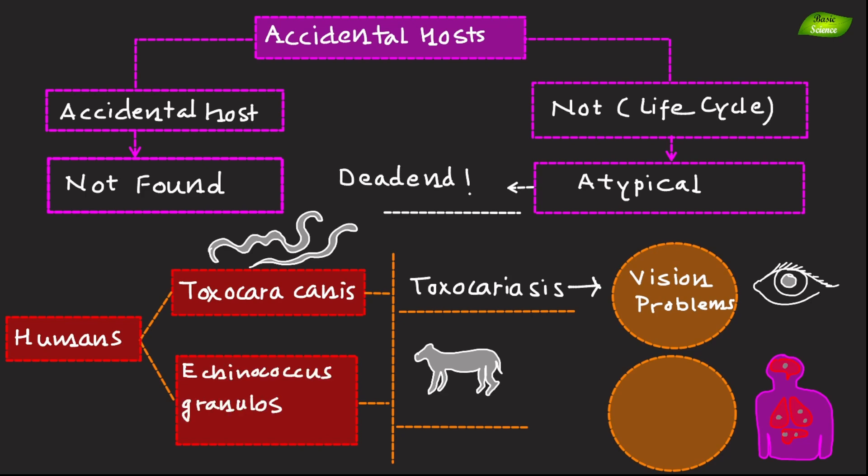Second example is humans for Echinococcus granulosus. While Echinococcus granulosus typically infects canines, humans can become accidental hosts, resulting in hydatid disease.